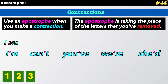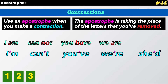The apostrophe is taking the place of the letters that you've removed. I'm is made of I and am — the apostrophe is replacing the letter A. In can't, the apostrophe is replacing the N and the O. In you've, it is replacing the H and A. In we're, it's replacing the A. And in she'd, it's replacing the W-O-U-L. Use an apostrophe in contractions to show the letters that you've removed.